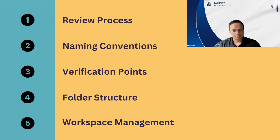The first best practice is about the review process. Any automation project would require a proper review process, which is very important in terms of best practices to be implemented across the team. You can only verify if these best practices are implemented using this review process. This also ensures that you're not introducing any code which is not tested or not reviewed properly, because this will go into your master branch and could disturb all the scripts or test cases which were earlier working. A proper review process is very important in any project.